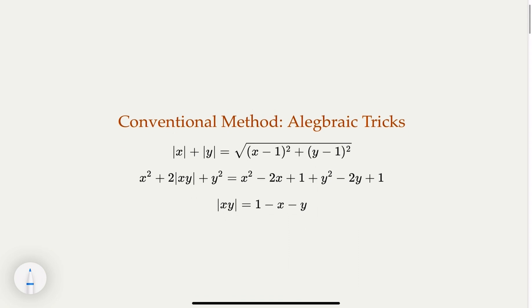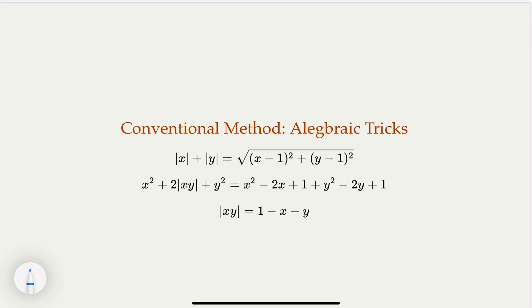The conventional method would just work from what we have and then try to find the minimum value, either using some algebra inequality tricks or calculus — take a derivative, analyze when the extreme value would be taken. So here, we are given this condition. What we can do if we use algebra is to square it so that terms cancel, simplify, and then work out the minimum value of x squared plus y squared. I think the hint is that you can use some inequalities to solve this problem.